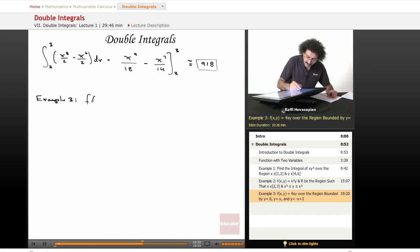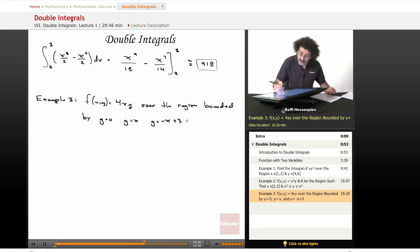We have f of xy is equal to, this time we'll do 4xy as our function, over the region bounded by y equals 0, y equals x, and y equals minus x plus 3.